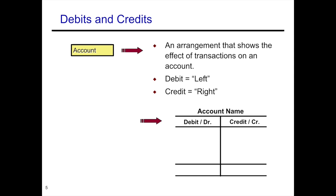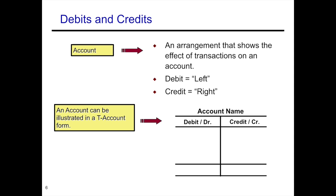So let's talk about an account. An account is an arrangement that shows the effect of transactions on an account — you've seen this before. This is also a t-account. The left side of your t-account is your debit side, and the right side is the credit side. Remember, it doesn't matter what type of account it is — whether it's an asset, a liability, or an owner's equity account — the left side is always the debit, the right side is always the credit.